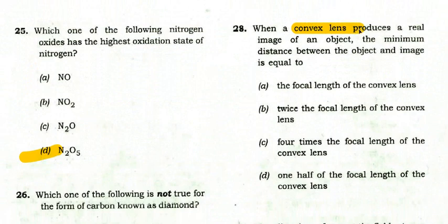When a convex lens produces a real image of an object, the minimum distance between the object and image is equal to — the option is C: 4 times the focal length of the convex lens.